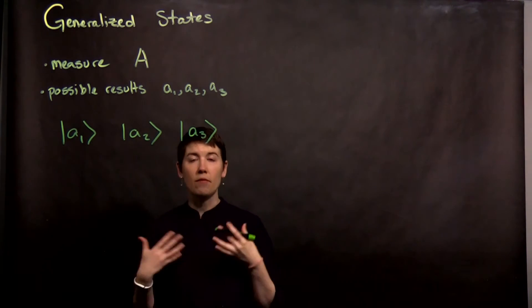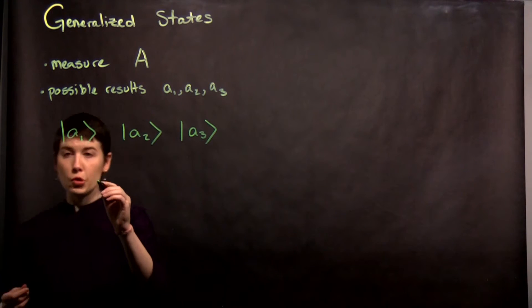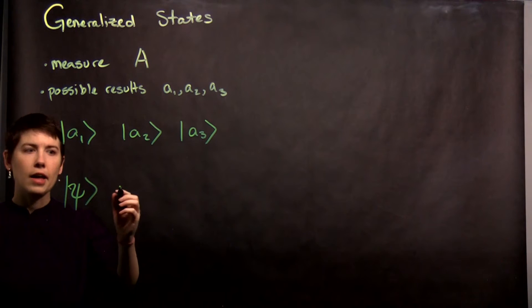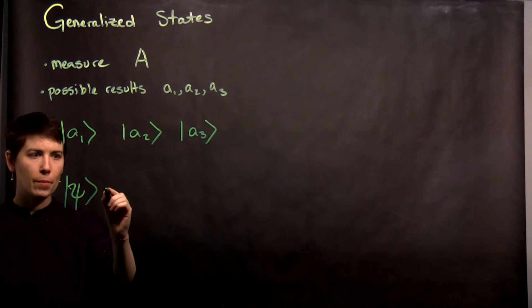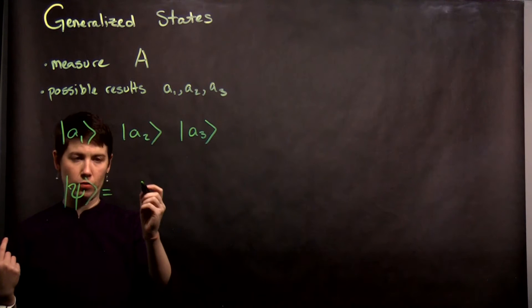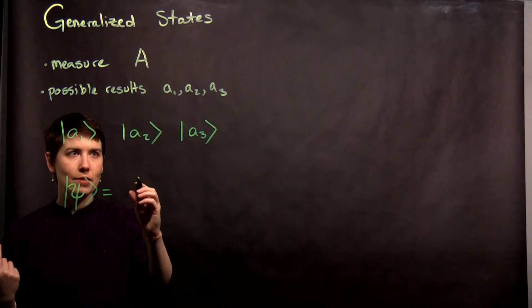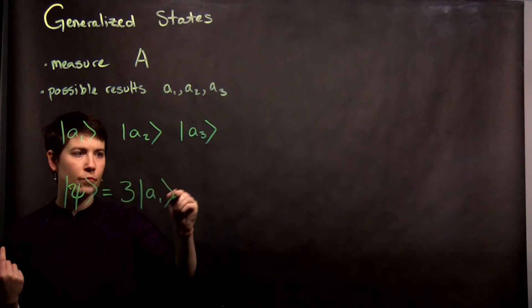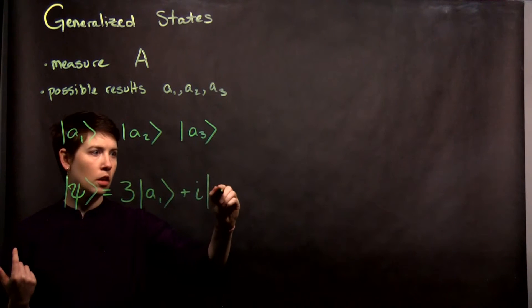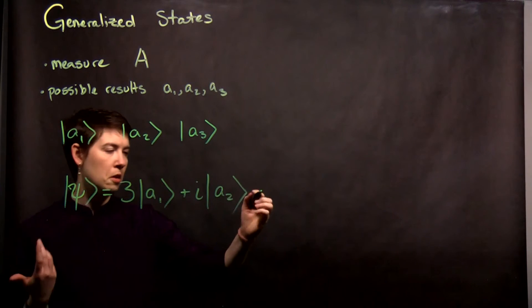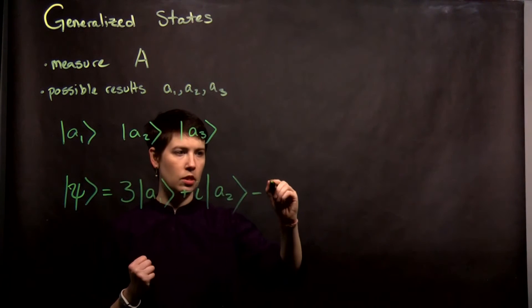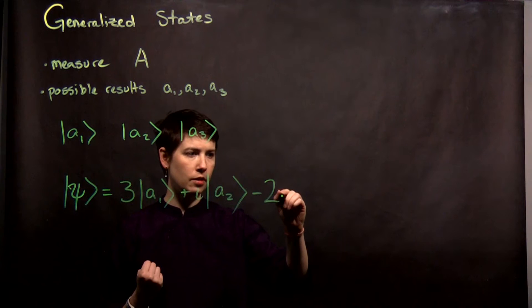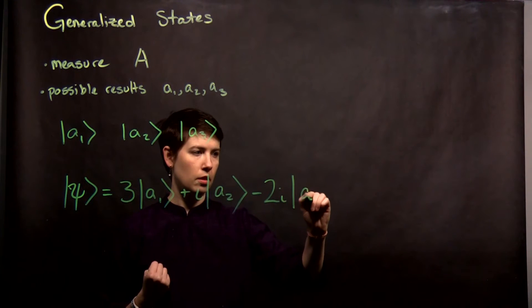Let's say that we're going to have a quantum state which is a superposition of some of these. I'm just going to make up something and then we'll have to do a little bit of normalization. So let's say that it is 3|A1> plus i|A2> minus 2i|A3>.